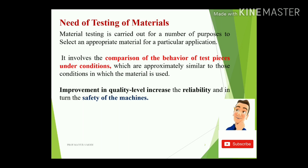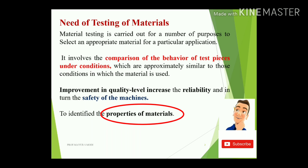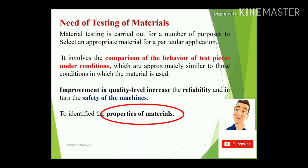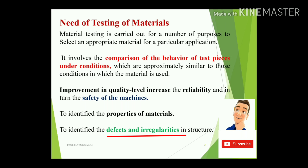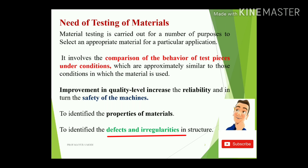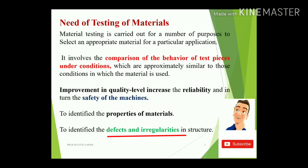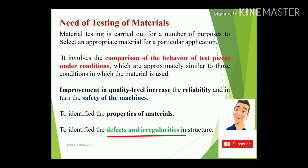By testing materials, we increase the safety of machines. Testing also helps identify the different properties present in materials according to the requirements of the application. Different materials have different properties, and testing helps identify defects or irregularities in the structure, since structure is directly proportional to the properties of the material. Testing confirms whether the selected material meets application requirements.